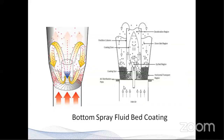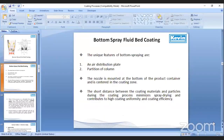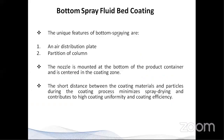In this diagram, we have shown the process of bottom spray for fluidized bed coating. As you can see, the inlet air is passed from the bottom to the Wurster column, and the pellets lying on the bottom of the product container are then lifted up in the air, and then the spray is done with the help of a spraying gun, which gives effective coating of pellets. The unique features of bottom spraying are an air distribution plate and partition column. The nozzle is mounted at the bottom of the product container, centered in the coating zone. The short distance between the coating materials and particles during the coating process minimizes spray drying and contributes to high coating uniformity, resulting in efficient coating.